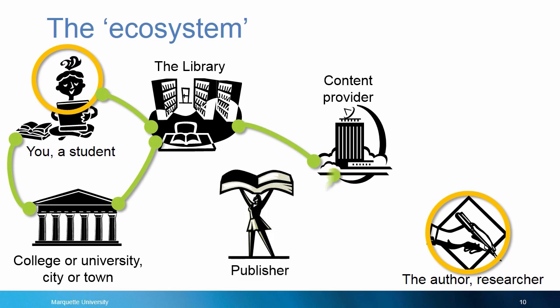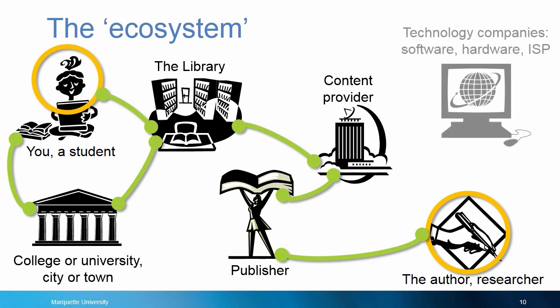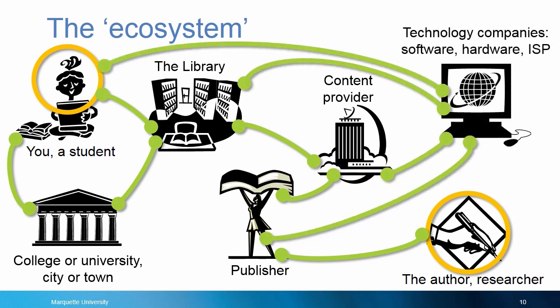The content providers negotiate contracts with the content editors, usually called publishers. Publishers, in turn, have contracts with the actual content creators — the authors and researchers. And everyone has to buy services from tech companies for software, hardware, and internet access. That includes you, if you use the library resources from off campus sometimes.